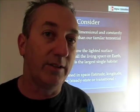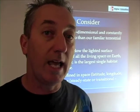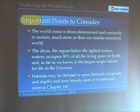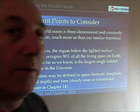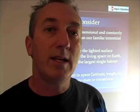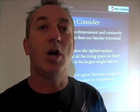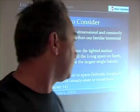We also have to consider that most of the ocean is very dark, very cold, and under high pressure. The abyss makes up 90% of all the living space on Earth, including the land, and in some sense it's the largest single habitat for life in the universe. As we'll discover, the abyss is not just a single habitat, but a collection of different habitats based on pressure, temperature, and other characteristics.